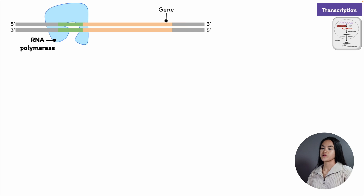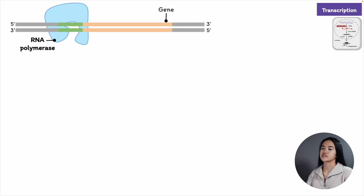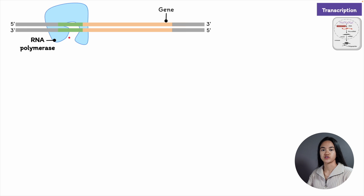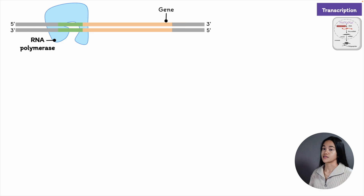How does RNA polymerase know where to start transcription? To start transcription, RNA polymerase must be able to recognize the start of a gene so it can bind firmly to the DNA at that position. There are specific nucleotide sequences along the DNA that signal where transcription of a gene begins and where it ends. The DNA sequence where RNA polymerase attaches and initiates transcription is known as the promoter.